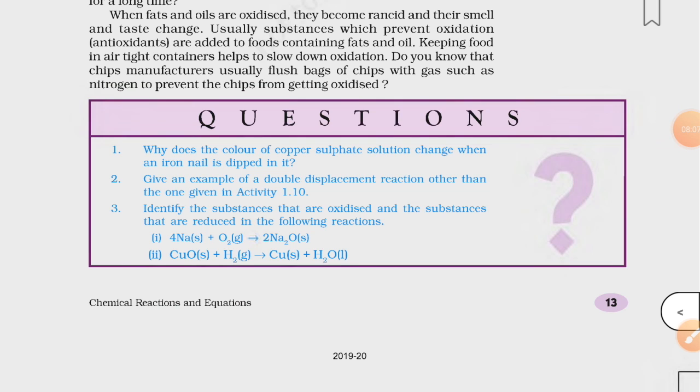Now, why does the color of copper sulfate solution change when an iron nail is dipped in it? Students, when iron nail is dipped in copper sulfate solution, then it undergoes a displacement reaction where more reactive metal iron displaces less reactive copper from its compound and forms iron sulfate. That's why you see the color changes from blue to green.